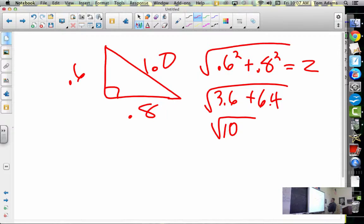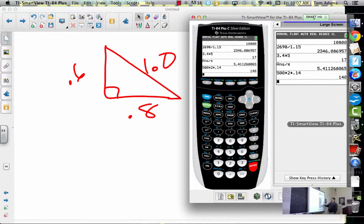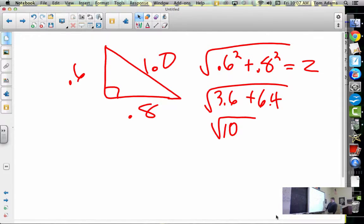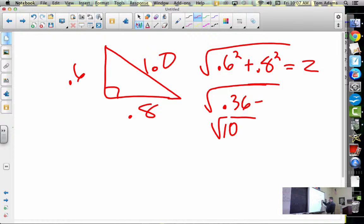This becomes 3.6 plus 6.4. What's the square root of 10? That can't be right. What did I do wrong? Let's do the calculator. 0.6 squared is 0.36, not 36. You're right, so I got the decimals wrong. I'm just doing this in a hurry. It's 0.36 plus 0.64, which is 1.00. So then Z equals 1.